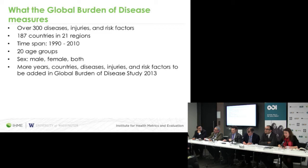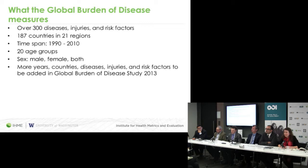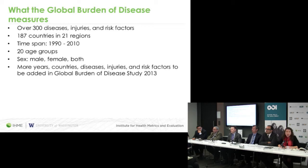The global burden of disease study is quite comprehensive. We're looking at over 300 different diseases, injuries and risk factors. It's a huge study looking at 187 countries in 21 different regions spanning the years 1990 through 2010 in its current iteration GBD 2010, and even 20 different age groups, so you can get a very detailed view of disease patterns. The GBD 2013 study to be published later this year will be adding even more diseases, injuries, risk factors and years.